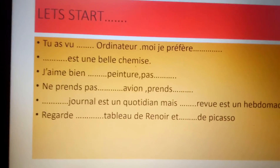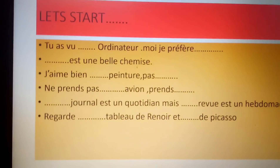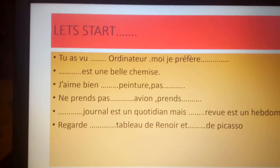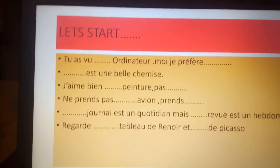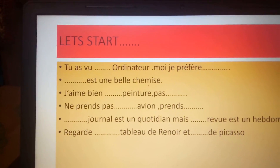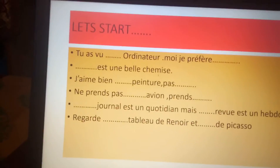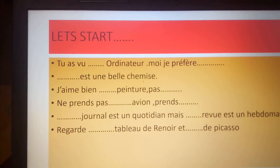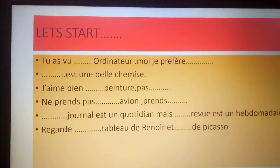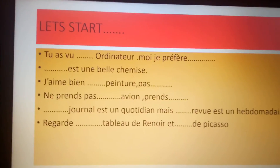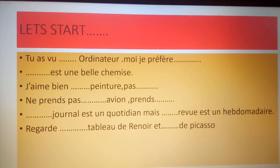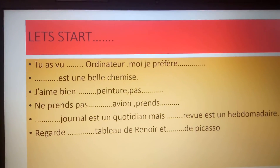Next part: 'ne prend pas' dash — since it starts with a vowel, we are going to have 'cet.' 'Ne prend pas cet agenda.' Also: 'ce journal est un quotidien, mais cette revue est un hebdomadaire.' This journal is a daily paper and this review is a weekly. What is 'quotidien'?